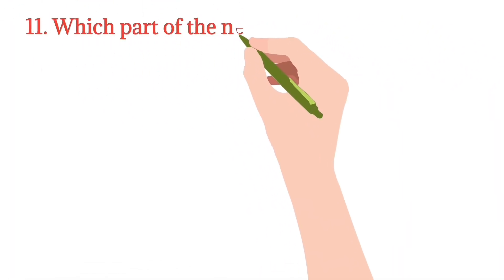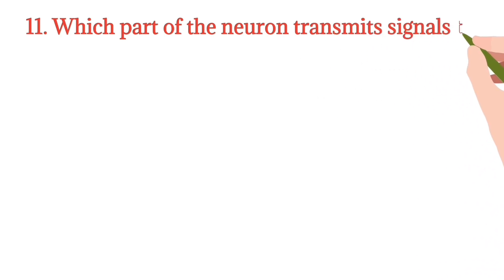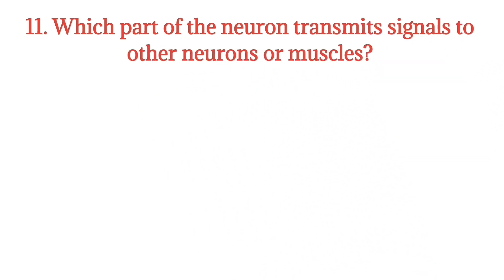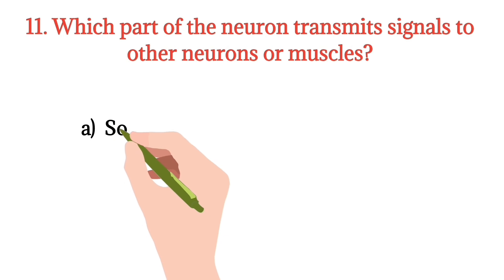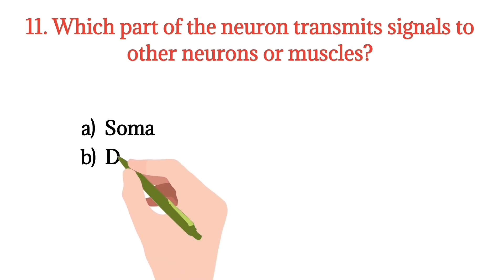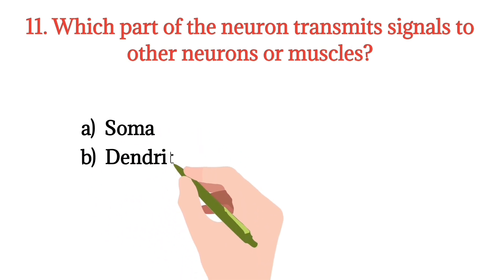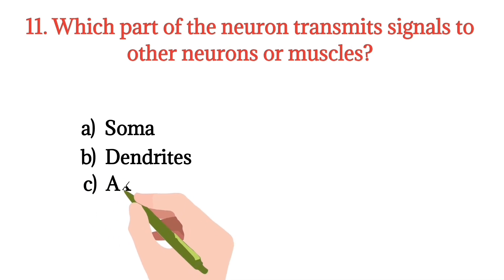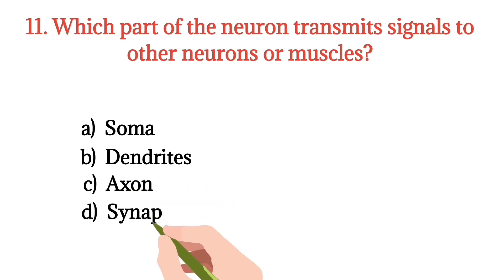MCQ number 11. Which part of the neuron transmits signals to other neurons or muscles? Option A: Cell body. Option B: Dendrites. Option C: Axon. Option D: Synapse. The right option is Option C.